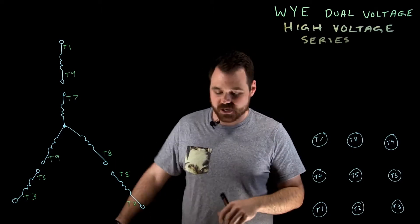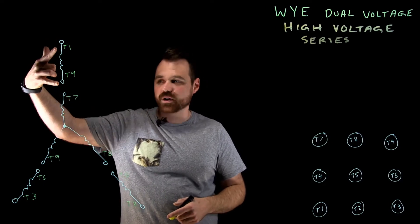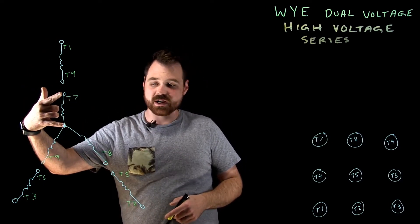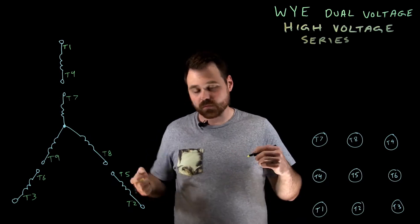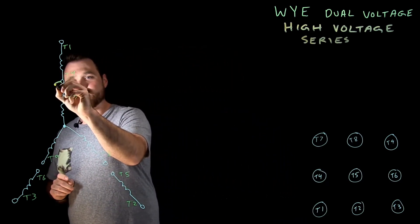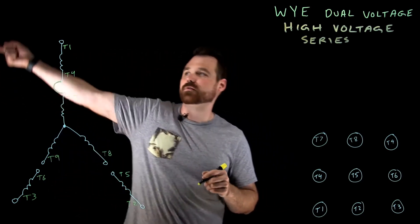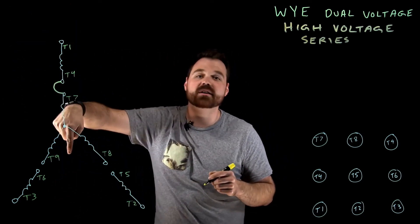So what I want to do is I want to take this winding here, my T1, T4 winding and put it in series with my T7 and T10 winding. Now in order to put that in series, it's as simple as putting a jumper right here from T4 to T7. Now current will flow in series.